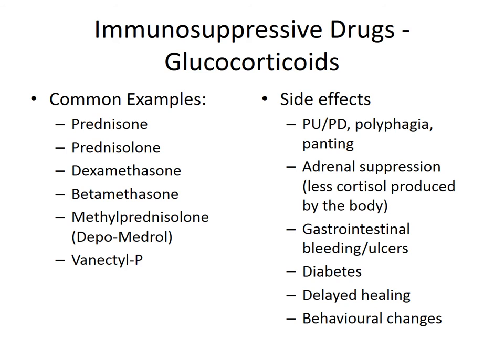Dexamethasone is often used injectably. Betamethasone is commonly used topically. Methylprednisolone — Depomedrol — is used in cats only, and lasts in the system for four to six weeks, toning down allergic responses. Some cats will come in for injections of Depomedrol every four to six weeks pretty much for life. Vinactyl, used in dogs, is a combination of prednisolone and an antihistamine. It tones down the immune response with the antihistamine, has a low dose of prednisolone, and addresses the inflammation that causes itching — really effective in allergic dogs.